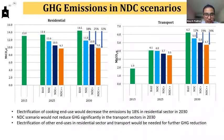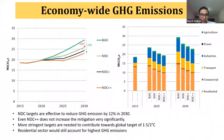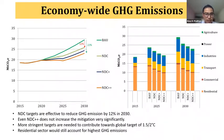Looking at GHG emissions in the NDC scenarios, electrification of cooking and transport would decrease emissions by about 18% in the NDC scenario, whereas in NDC plus-plus it would decrease by about 32% in the transport sector. In 2030 in the NDC plus-plus scenario, there would be a decrease by 24%. The economy-wide GHG emissions show the NDC targets are effective to reduce GHG emissions by 12% in 2030, and even with the higher level of electrification in NDC plus-plus, the reduction is only 22%. We need more stringent targets to contribute towards the global target of 1.5 and 2 degrees Celsius.